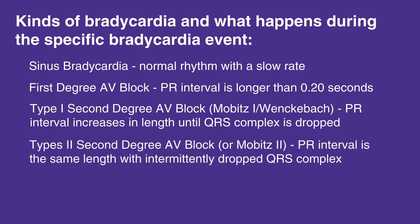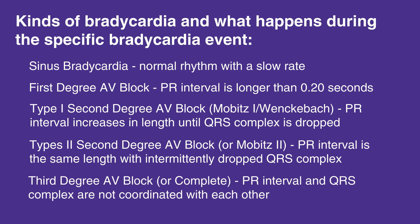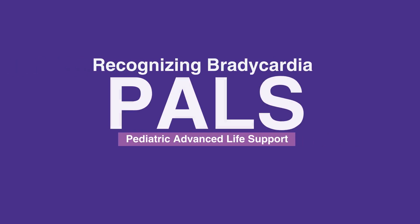Type 2 second degree AV block, or Mobitz 2: PR interval is the same length with intermittently dropped QRS complex. Third degree AV block, or complete: PR interval and QRS complex are not coordinated with each other. This concludes our lesson on recognizing bradycardia. Next, we will review responding to bradycardia.